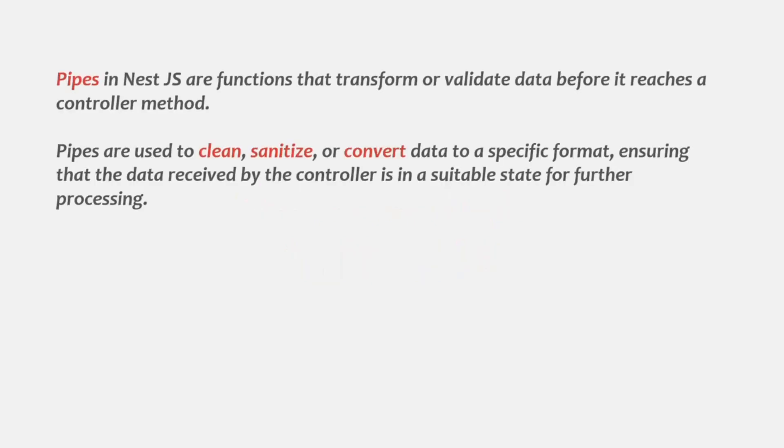So what are pipes? Pipes in NestJS are basically functions that transform or validate the data which comes with the request before it reaches the controller method. A pipe is a function which gets executed before the controller. So before a request reaches the controller, the request first goes through a pipe.